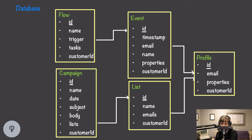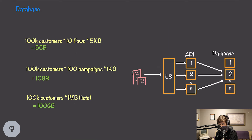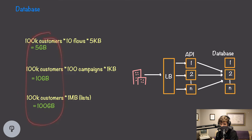Doing the math: with 100,000 customers each having 10 flows, that's only 5 gigabytes of data. If each customer has sent 100 campaigns at 1 kilobyte each, that's only 10 gigabytes. If each customer has 1 megabyte worth of lists, that's only 100 gigabytes. This could be stored on a single database node, so we don't necessarily need sharding here. However, because we have such an easy shard key on customer ID and we're already sharding for events and profiles, we might as well shard here too to allow scaling as the number of customers grows.